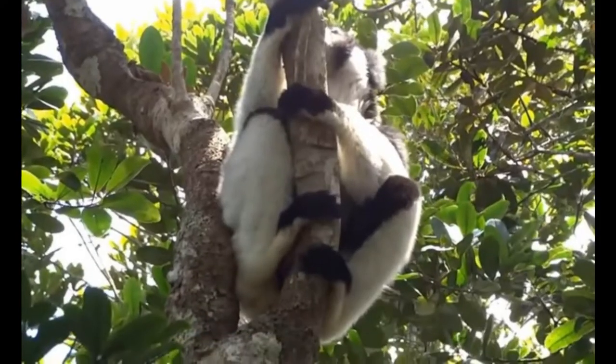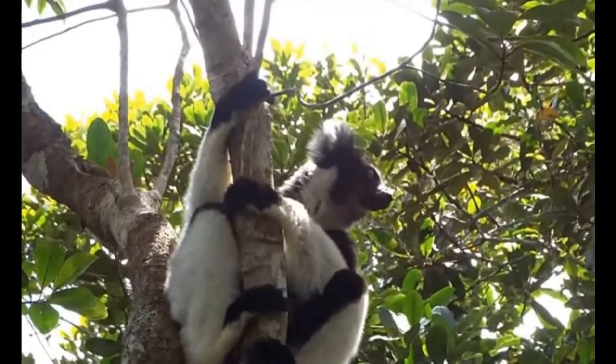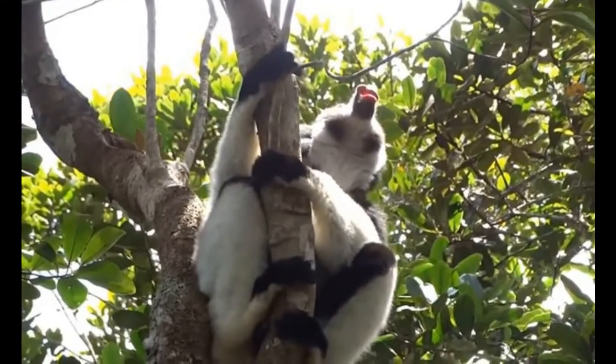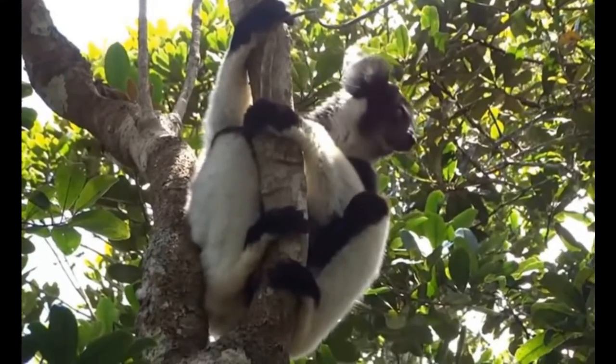The first one is the indri lemur in the family Indriidae. It is native to eastern Madagascar. It's the largest living species of lemur, and their population currently is between 1,000 and 10,000, so they're endangered.